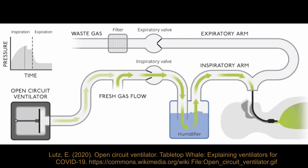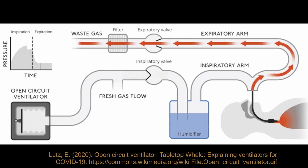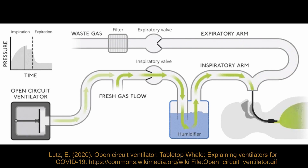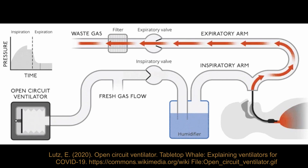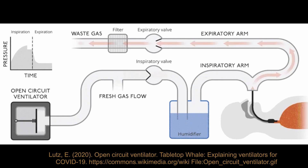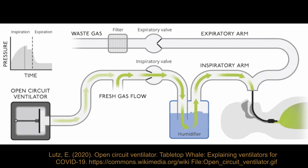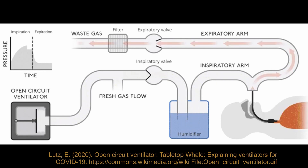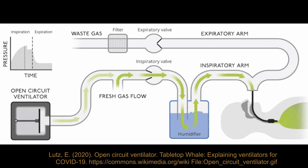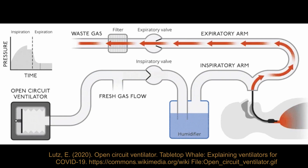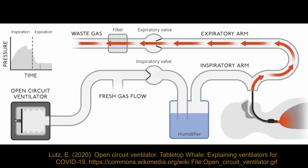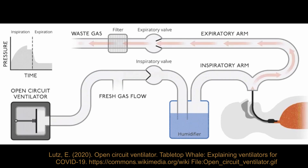The ventilator uses pressure differences to move air within the patient circuit. Positive pressure is used to push air into a patient's lungs via a tube. This contrasts with the regular breathing mechanism, which uses negative pressure from the lungs expanding to draw in air. Exhalation of this air can be passive, done by the patient, or can be an active part of the ventilator operation.